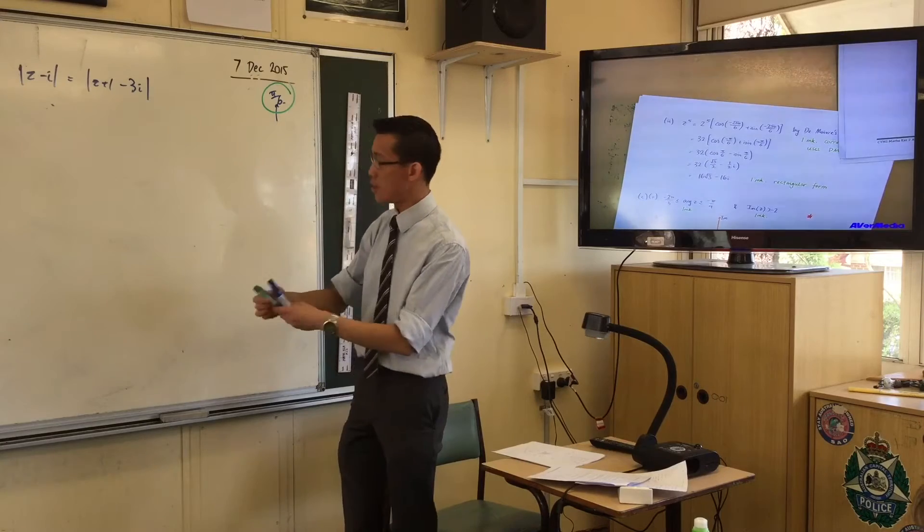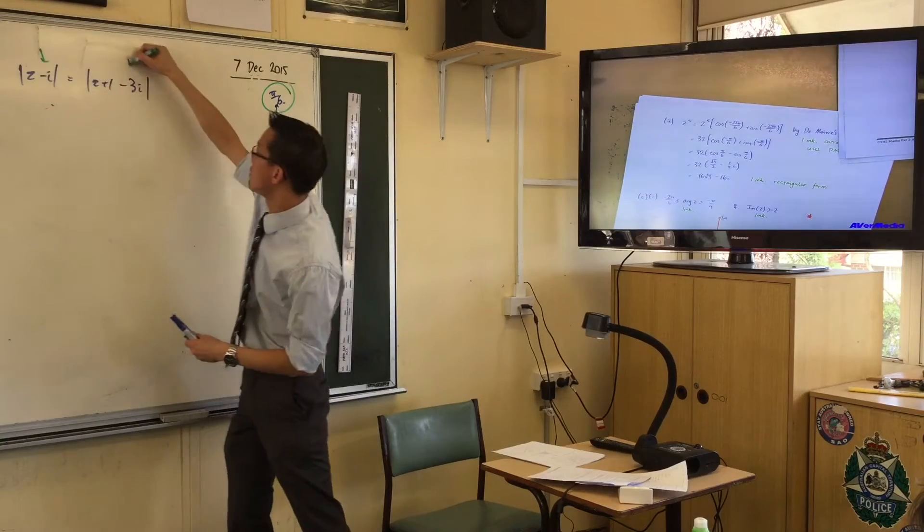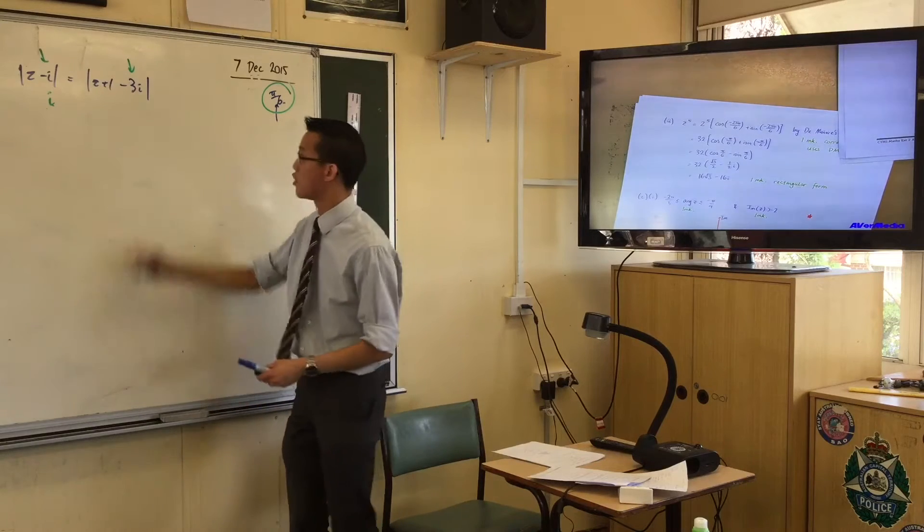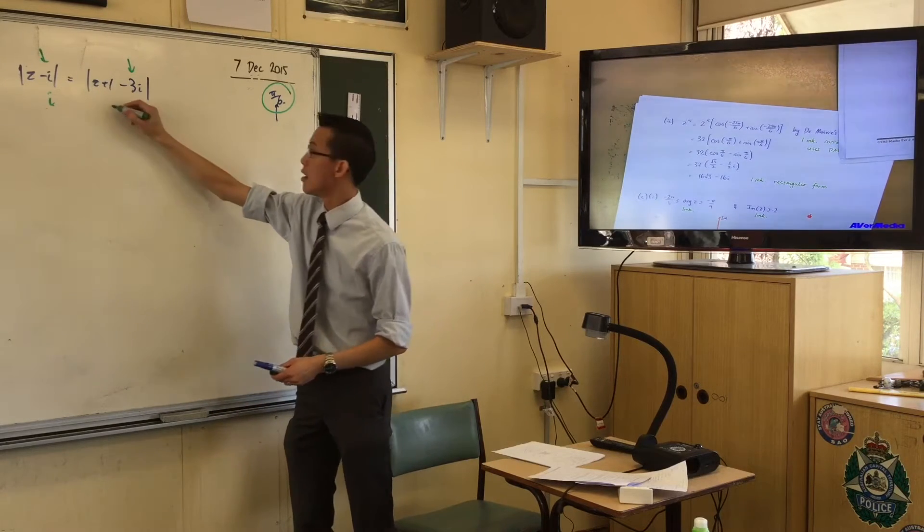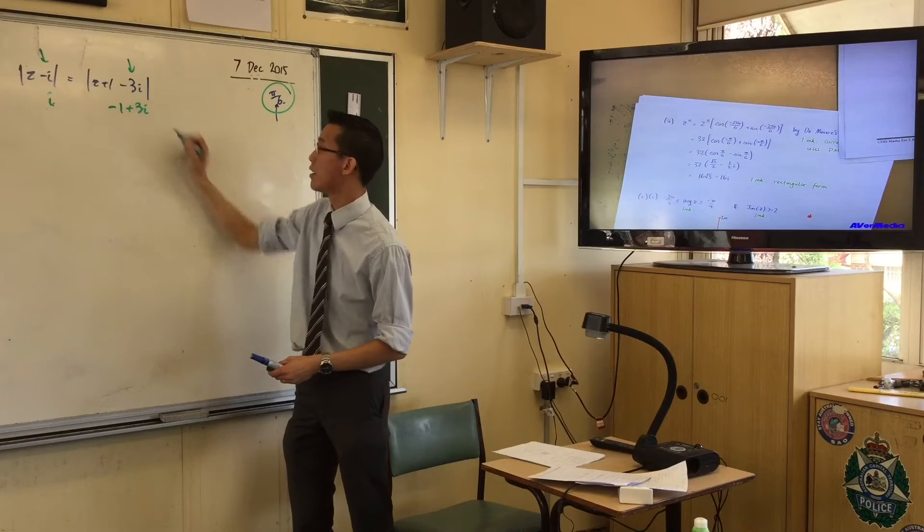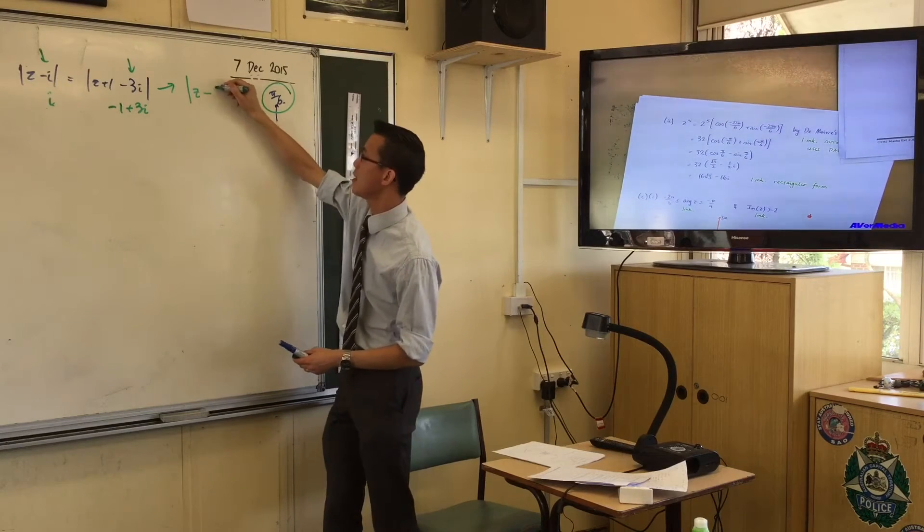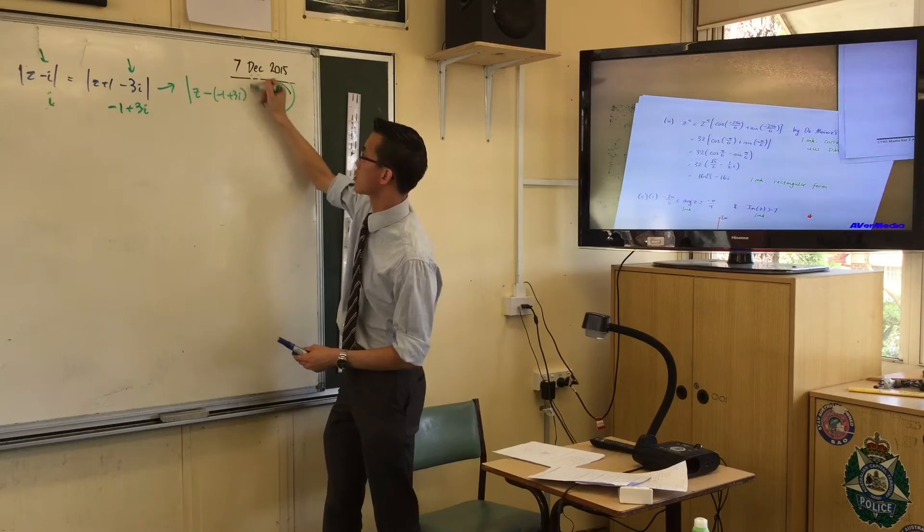Think about this. What does this mean? You've got two points that you're comparing to. You're measuring the distance from i, and you're measuring the distance from minus 1 plus 3i, because really that's actually z take away negative 1 plus 3i.